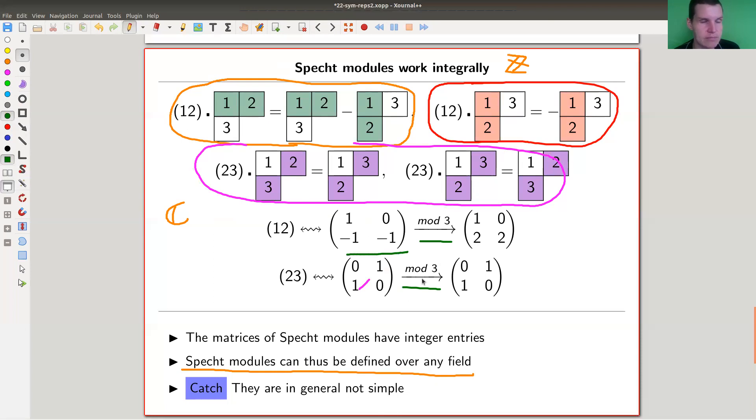Something funny happens with those two matrices. This representation is simple over the complex numbers, but now I have a common eigenvector. The vector (1,1) is clearly an eigenvector of this one with eigenvalue one. But it's also an eigenvector of this matrix because you get one and four, but four in characteristic three is one again. So this is an eigenvector of the upper matrix. The two matrices have a common eigenvector. There's a one-dimensional subspace in my representation, and it's not simple anymore.